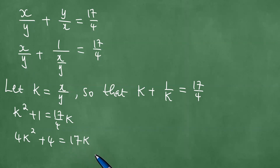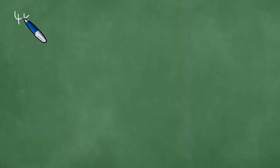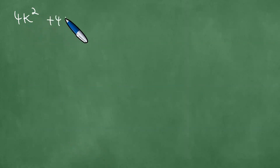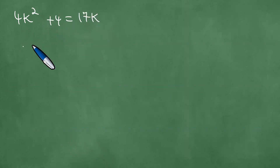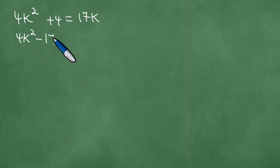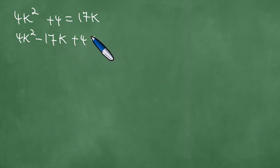Multiplying through by 4, we have 4k squared plus 4 equals 17k. So we then have that 4k squared plus 4 equals 17k.